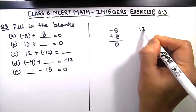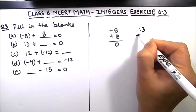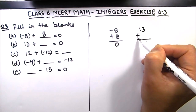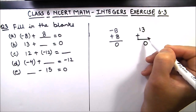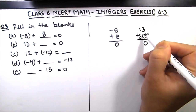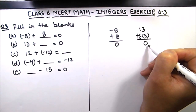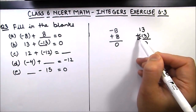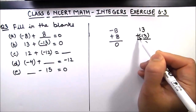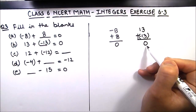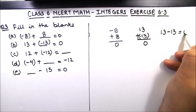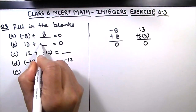The next part is also the same type: 13 plus what number will give you 0. We have plus 13 and we are adding a number to it. The number you add must be of the opposite sign so that the two numbers give 0. You should add a negative number of the same value to a positive number to get 0, because plus and minus will become minus. So 13 minus 13 will be 0, meaning the answer is minus 13.